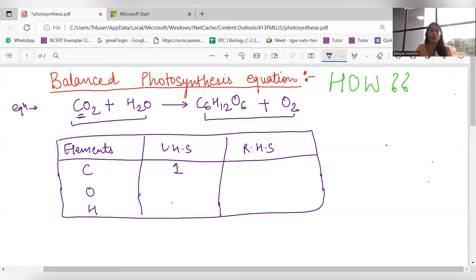So left-hand side again: oxygen, oxygen, hydrogen, hydrogen, carbon. Now oxygen in C6H12O6 means 8 oxygen, okay? And hydrogen, hydrogen is how much? Right-hand side H12 means 12 hydrogen.